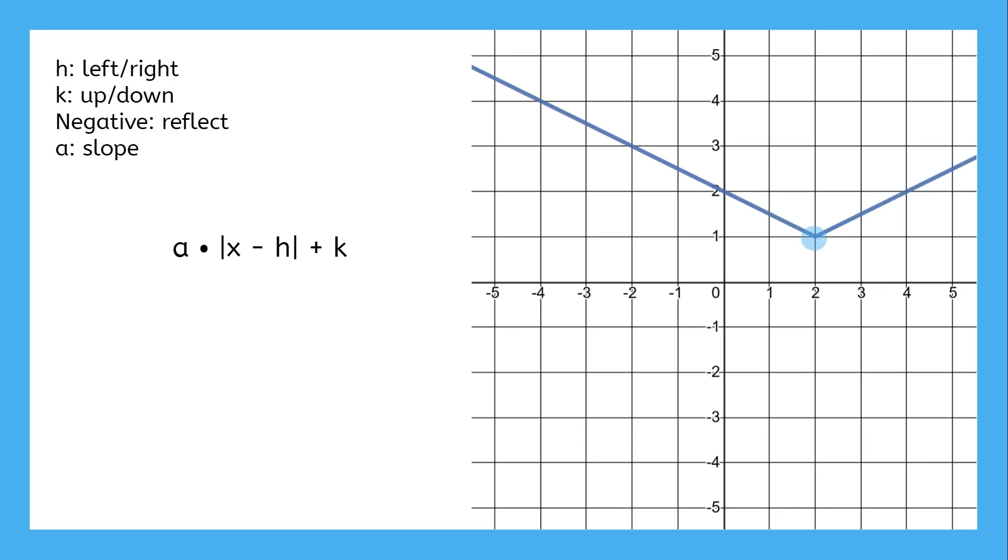For this graph, the vertex has moved 2 units to the right, so h is positive 2, and the graph is 1 unit higher than normal, so k is positive 1. The graph hasn't been flipped upside down, so the multiplier will not be negative. And finally, the slope is 1 over 2. By plugging each of these pieces in, we get the function for this graph is 1 half times the absolute value of x minus 2 plus 1.